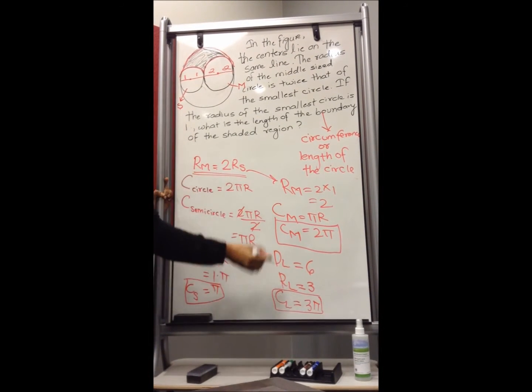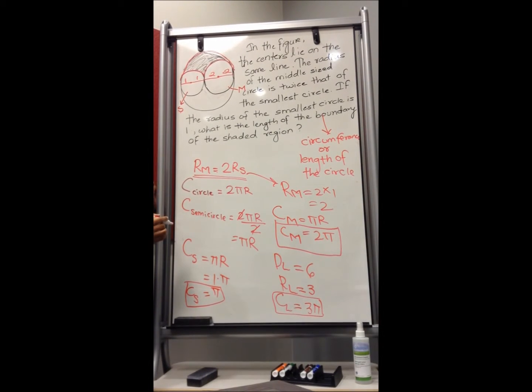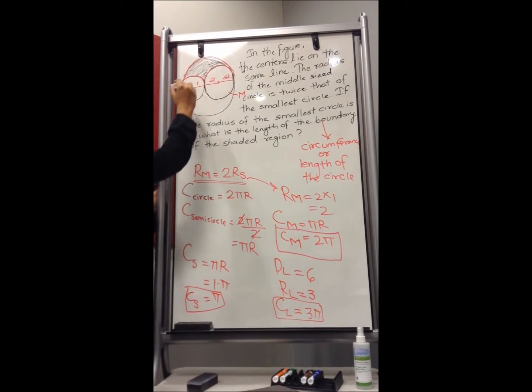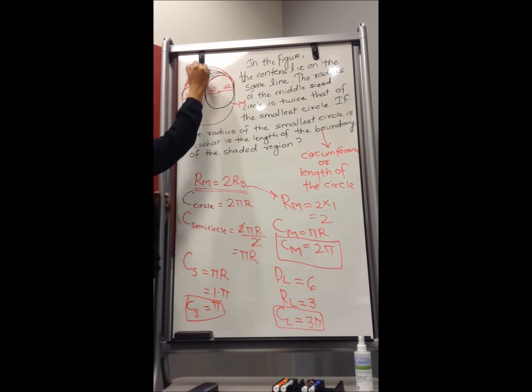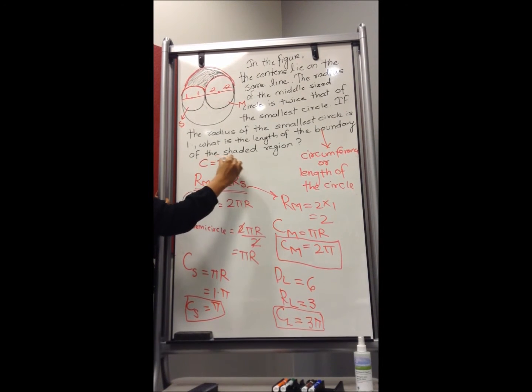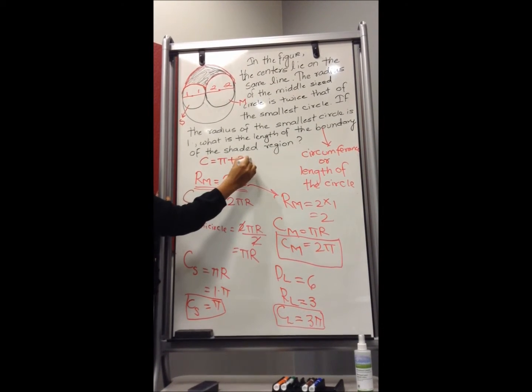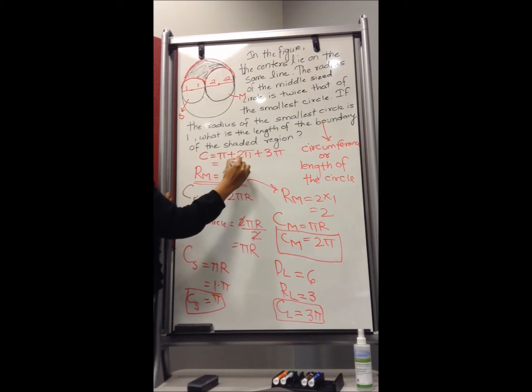Now once I got the circumference of the semi-circle of the smallest circle, medium circle and larger circle, I'm going to add all three of them to find the boundary of the shaded region, which would be pi plus 2 pi plus 3 pi, which is 6 pi. And that's your final answer.